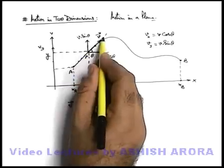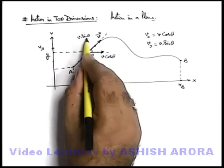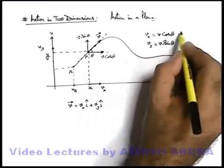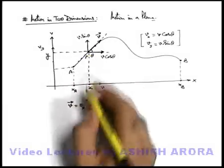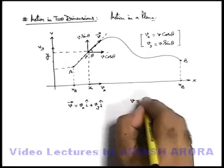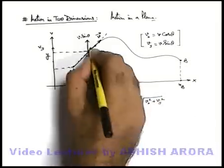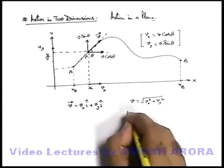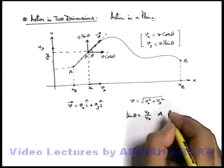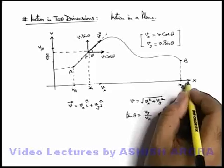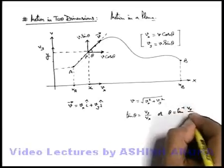At any instant of time the velocity can be resolved into two components: one is the component with which it is moving in the x-direction, and the other with which it is moving in the y-direction — vx = v cos theta and vy = v sin theta. If we want to calculate the magnitude of this velocity, it can be written as the square root of vx squared plus vy squared. And the angle theta, which the velocity vector makes with the positive direction of the x-axis — or the slope angle of the curve — can be given as tan inverse of vy by vx.